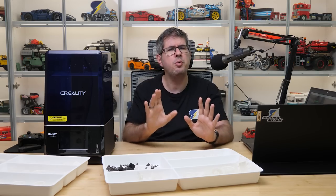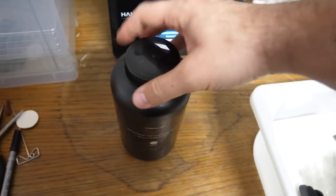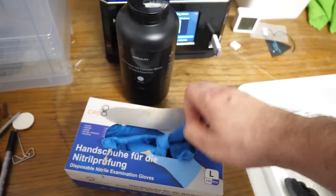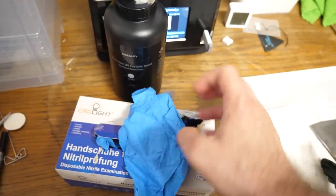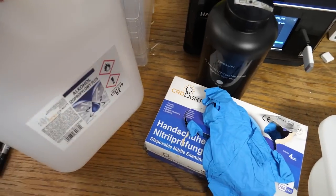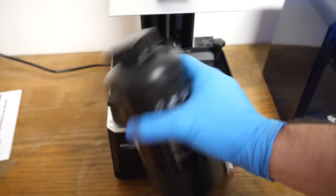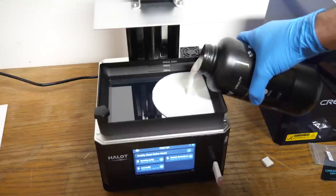Before we get started, a few words about safety. Resin is toxic and should never touch your skin if it hasn't cured yet. If you may come in contact with the liquid resin, wear nitrile gloves. Proper ventilation is also important when working with the resin and IPA. We need to shake the bottle and then pour some resin into the vat.